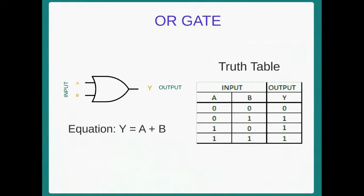Now we will discuss about OR gate. Two inputs are there. One input is A and another is B. The output is Y. Truth table: for input 0, 0, output is 0. For input 0, 1, output is 1. For input 1, 0, output is 1. For input 1, 1, output is 1. Equation: Y equal to A OR B.